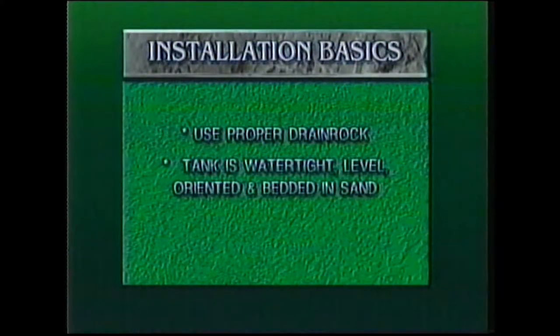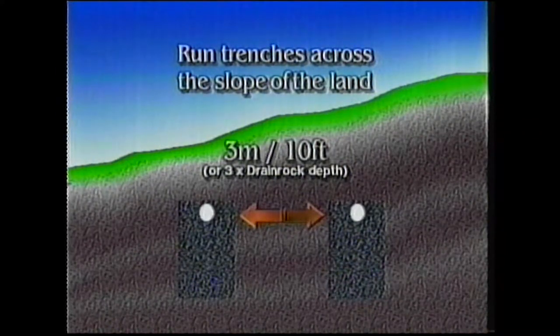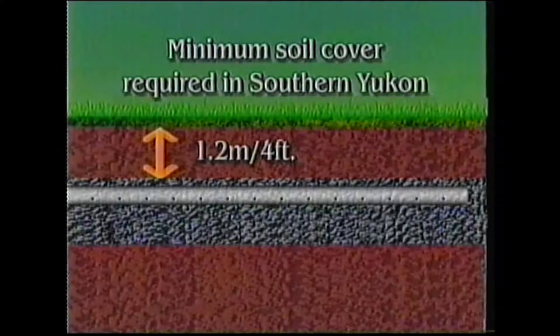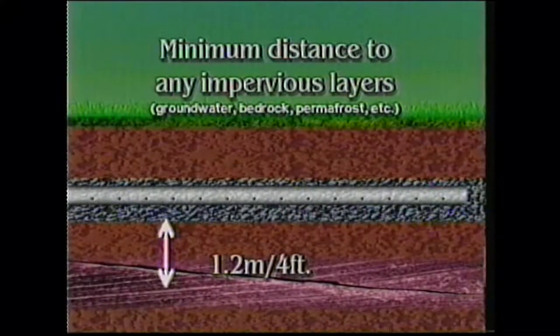Ensure your tank is watertight, level, oriented properly, and bedded in sand. Trenches must be dug across the slope of the land, and the distance between the trenches not less than three meters or ten feet, or three times the drain rock depth, whichever is greater. The amount of soil cover needed can vary depending on your location. Typical soil cover required in the southern Yukon is 1.2 meters or four feet without insulation. In some instances, this can be reduced by using five centimeters or two inches of rigid styrofoam to insulate the system before backfilling. There must be at least 1.2 meters or four feet of separation from the bottom of the drain rock to groundwater, permafrost,